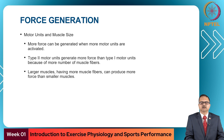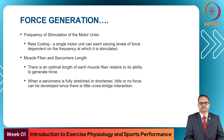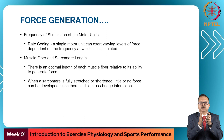More force can be generated when more motor units are activated. Type 2 motor units generate more force than type 1 because of their larger number of muscle fibers. Larger muscles with more fibers can produce more force than smaller muscles. A single motor unit can also exert varying levels of force depending on the frequency at which it is stimulated — a process called rate coding. There is an optimal length for each muscle fiber; when the sarcomere is fully stretched or fully shortened, little or no force can be generated due to minimal cross-bridge interaction.